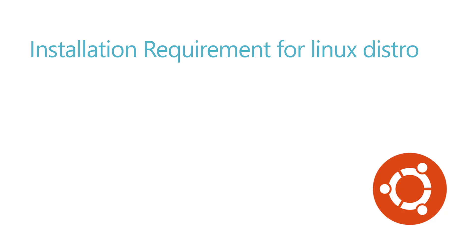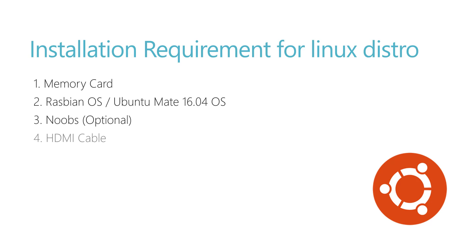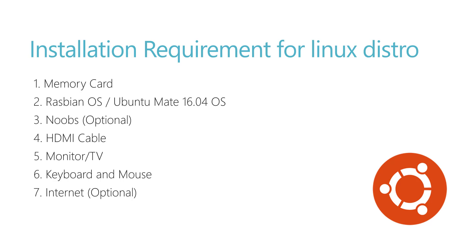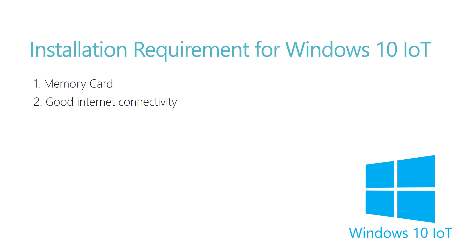The installation requirements for the Linux distro that we discussed in Part 3 of this video series included: a memory card, a Raspbian OS or Ubuntu Mate operating system, NOOBS, HDMI cable, monitor or TV, keyboard and mouse, and optional internet. Of course a monitor or TV is not required if you know how to configure Raspberry Pi using network connectivity. But the installation requirements for Windows 10 IoT are very, very simple.